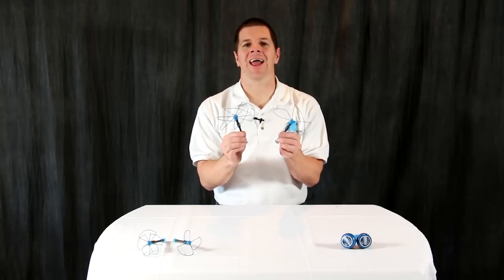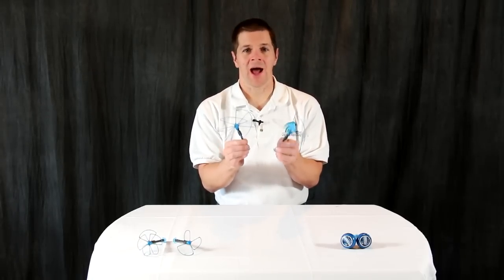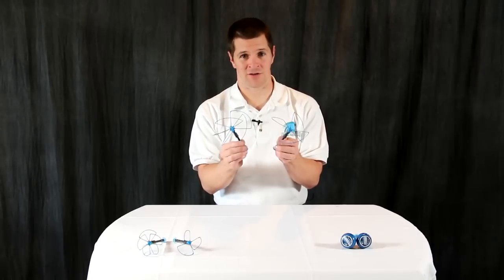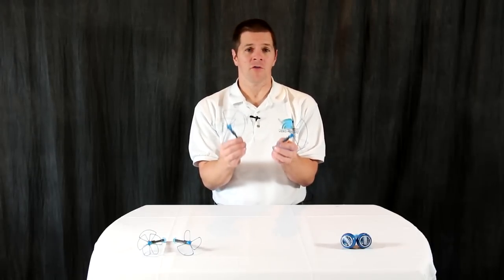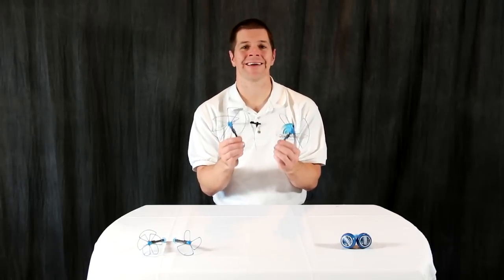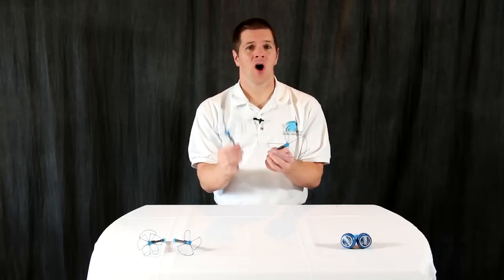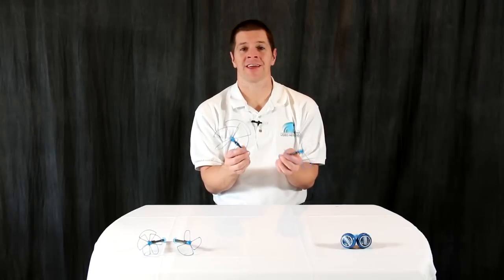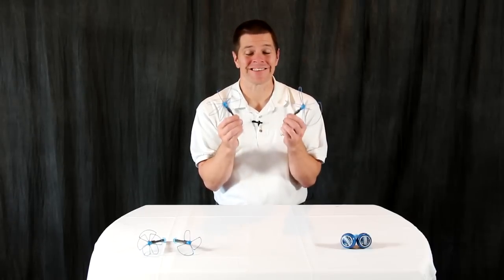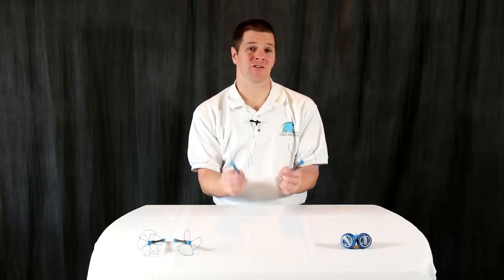They are designed to give the absolute maximum range and clarity out of your FPV video system. Most users report two to three times the range and clarity when using a set of Bluebeam Ultras over other circularly polarized antennas and up to six to seven times the range over their stock antennas.